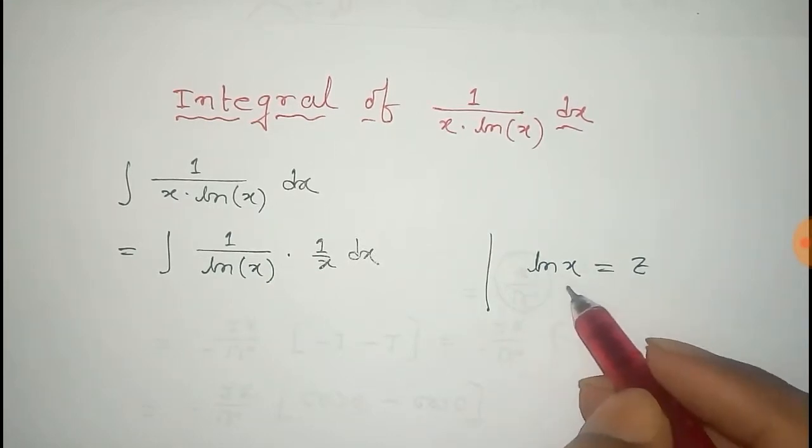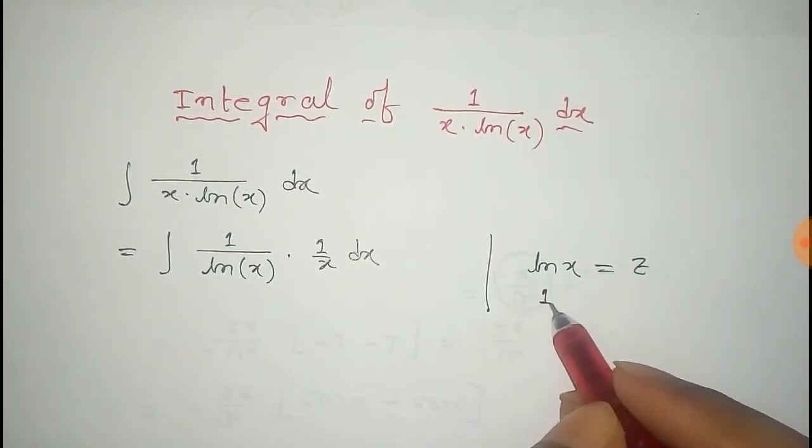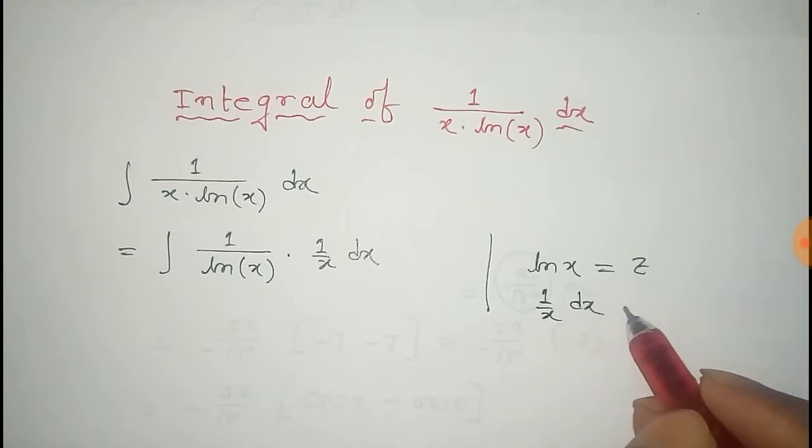Now differentiating on both sides we get 1 by x dx equals to dz.